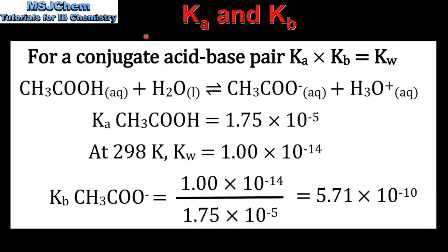Next we look at the relationship between Ka and Kb for a conjugate acid-base pair. For a conjugate acid-base pair, Ka multiplied by Kb equals Kw. In this example, ethanoic acid and the ethanoate ion are a conjugate acid-base pair. The Ka for ethanoic acid is 1.75 × 10⁻⁵. At 298K, Kw equals 1.00 × 10⁻¹⁴. So Kb for the ethanoate ion equals Kw divided by Ka for ethanoic acid, which is 5.71 × 10⁻¹⁰.